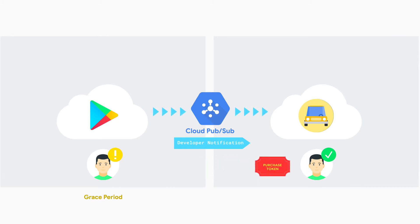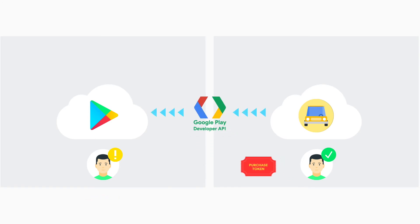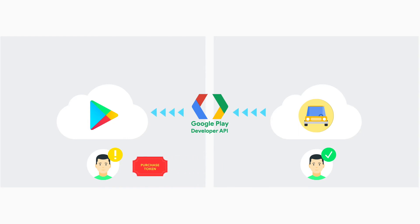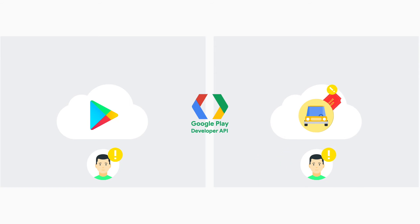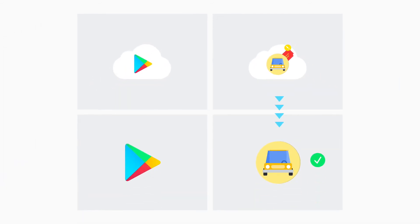This purchase token doesn't contain the details of the change, so you'll need to send the purchase token from your secure backend to the Google Play Developer API to get the updated information attached to the purchase token. Once verified, you will have the revised information about the subscription, which can be stored on your backend server, as well as sent to your Android app, if needed, to ensure users have access to the appropriate in-app content and services.